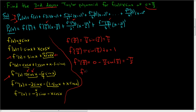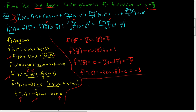For the third derivative at pi over 2: negative 3 times sine of pi over 2, and the cosine of pi over 2 is 0, so minus 0. Since sine of pi over 2 is 1, f triple prime of pi over 2 equals negative 3. To summarize: f of pi over 2 is pi over 2, f prime of pi over 2 is 1, f double prime of pi over 2 is negative pi over 2, and f triple prime of pi over 2 is negative 3.